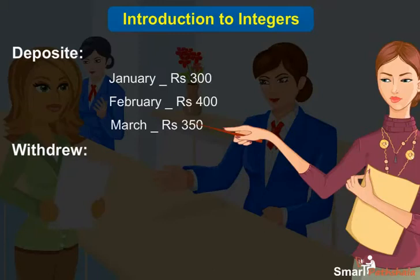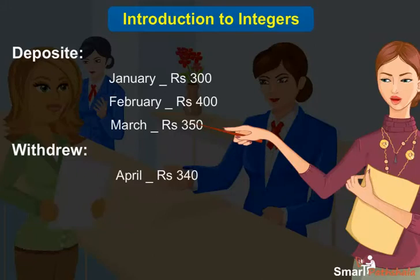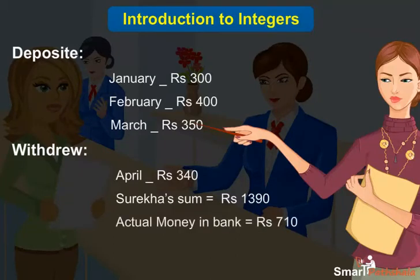She withdrew Rs. 340 for buying goods in April. Now she wants to know the balance of the account. She added all the numbers to get the account balance, but to her surprise the account had less money than she calculated. The difference is because instead of subtracting Rs. 340, she added it.